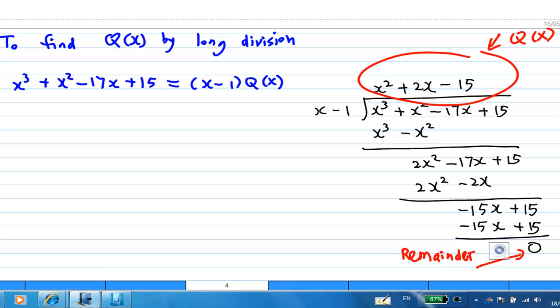So that means that p(x) is equal to x minus 1 times x squared plus 2x minus 15.